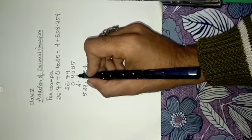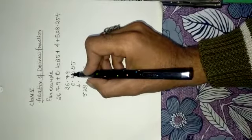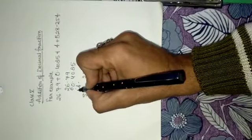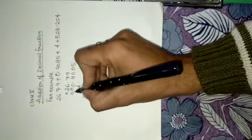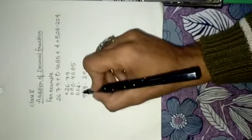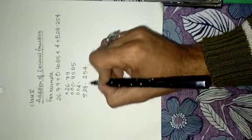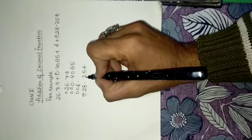To make your confusion removed, what you can do, you can put zeros on the left place to make it equal to the largest decimal fraction.